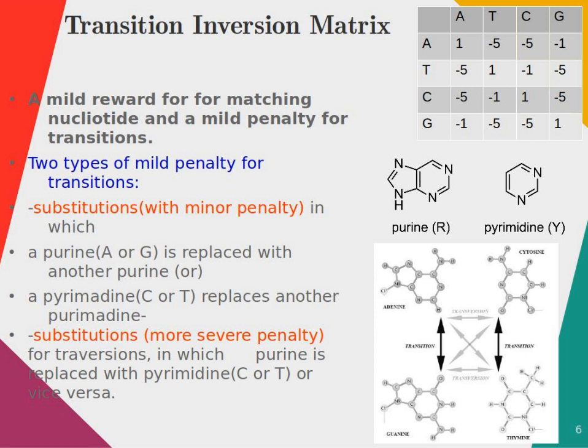So we assign a minor penalty value of minus 1. When we search for the matching of A and find T or C, that is pyrimidine, then the substitution value is minus 5 — a more severe penalty value is given. Because T and C have a pyrimidine structure with only a single ring shape, whereas purines have two rings. The substitution with minor penalty is called transition, whereas substitution with more severe penalty is called transversion.